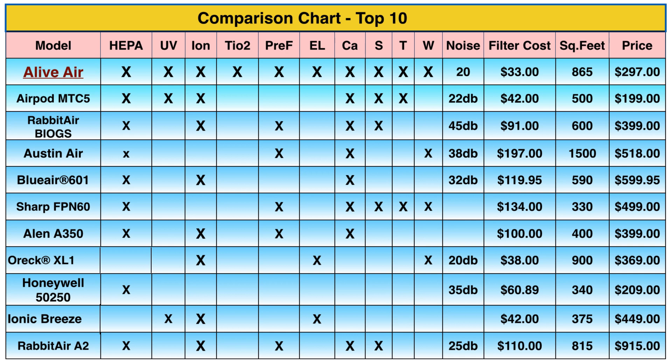S is for sensors — whether it detects what's going on in the air. T is for timer, whether you can turn it on and off by a timer. W is for warranty. Then you have noise, filter costs, square footage, and price.